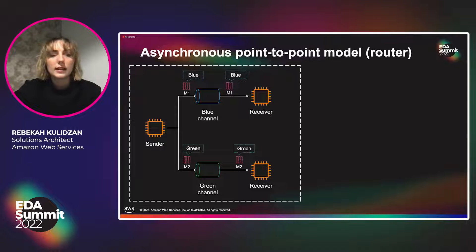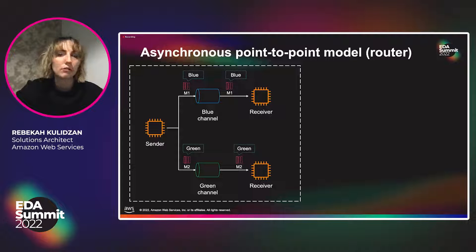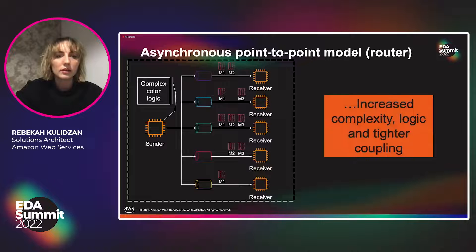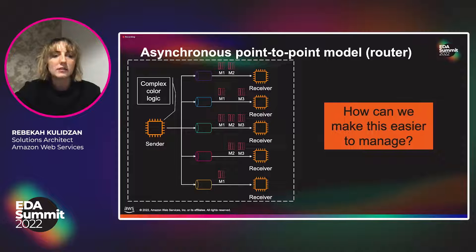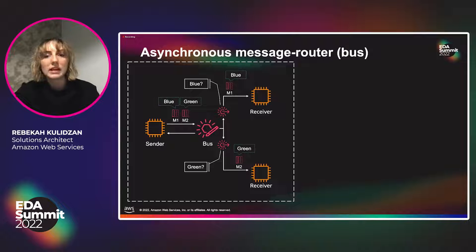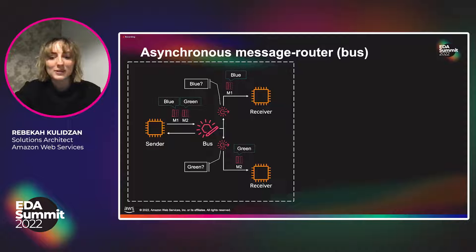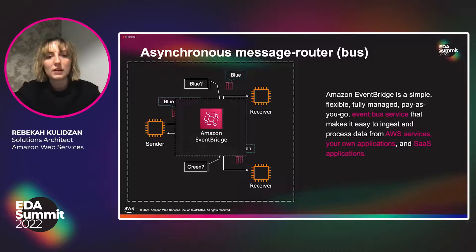The next pattern is the asynchronous point-to-point model or router. Event routers need to decide where messages need to go — in this example, the blue channel and the green channel. As you add more colors and more messages, this increases complexity in the logic and tighter coupling, and the sender maintains that routing logic over time. So how can we make this easier to manage? We still have that sender and receiver, the green and blue, but we have an intermediary bus to help route those messages to the right place.